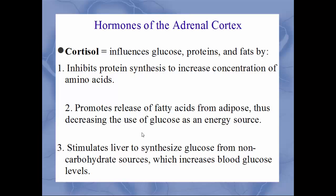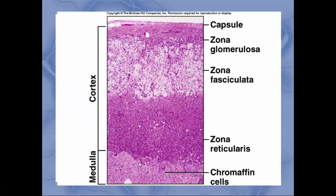Cortisol's third mechanism is stimulating the liver to synthesize glucose from non-carbohydrate sources, also raising blood glucose. The overall purpose of all three mechanisms is to make more energy available immediately. In cross-section, the cortex appears distinct from the medulla in the middle — you must track which hormones come from which region.